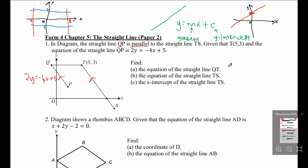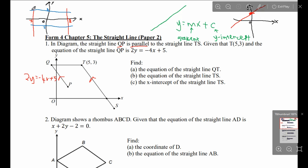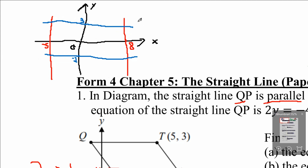Find the equation of the straight line QT. QT is a horizontal line. We know that the equation of a straight line will be Y equals to MX plus C, where M is the gradient and C is the Y-intercept. The Y-intercept is the point that cuts the Y axis. For a horizontal line, we will have Y equals to something — just refer to the Y-intercept. So for this blue line, if the Y-intercept is 3, the equation will be Y equals to 3.